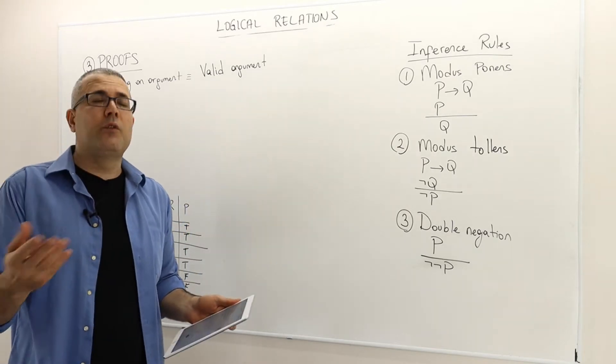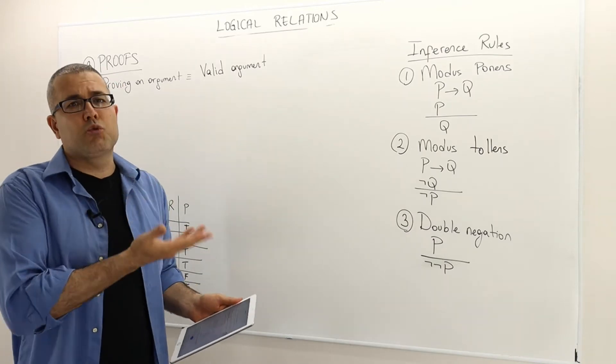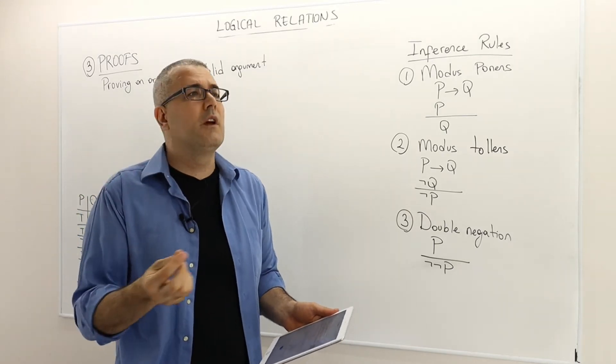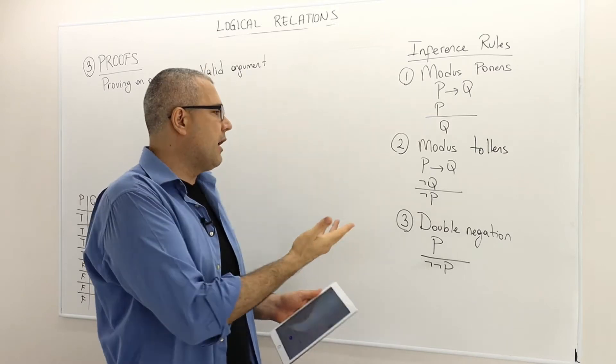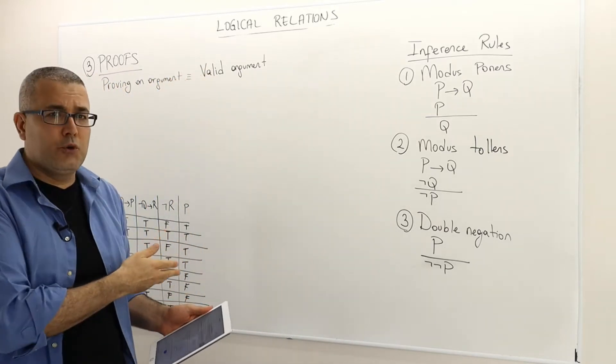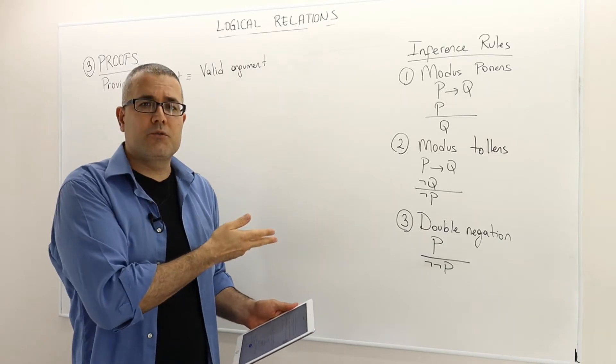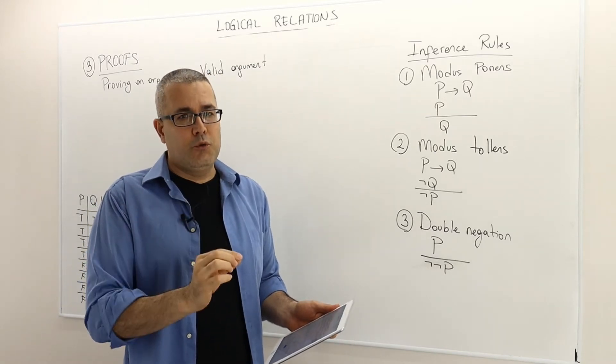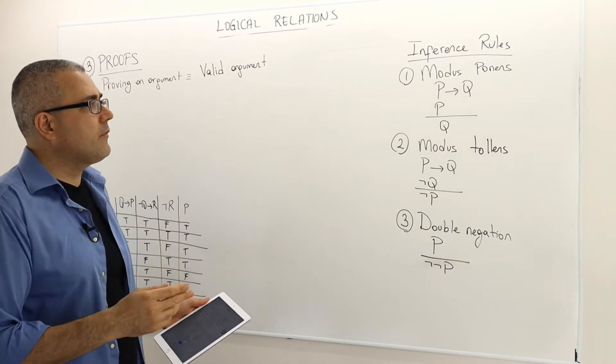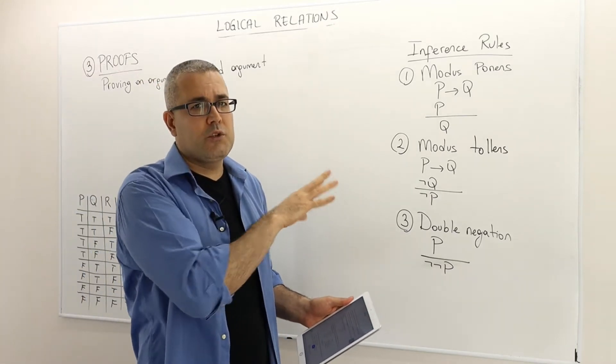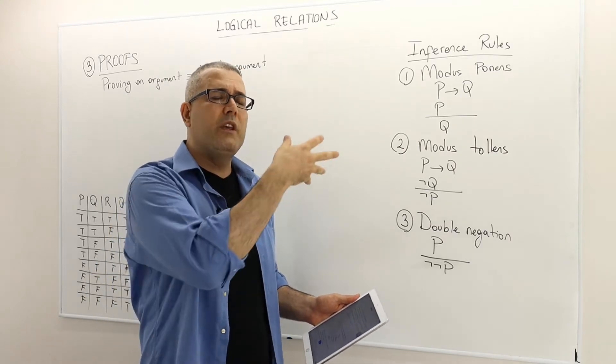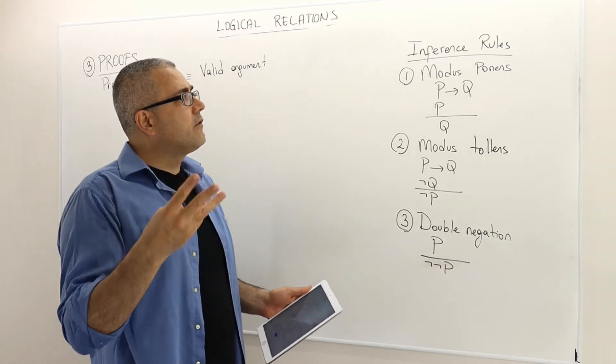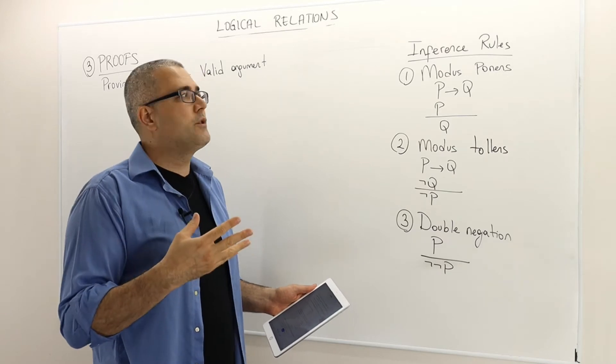Instead, we do proof by using inference rules. So inference rules are actually arguments, short arguments, that can be proven by the truth table. We actually did prove some of those inference rules, but once again, inference rules are shorter arguments, which is easier to prove by truth table. So we're going to note those inference rules, and along the way we are going to introduce more rules, and we can use them in our proofs as a shortcut.